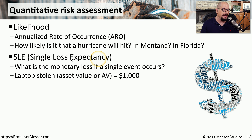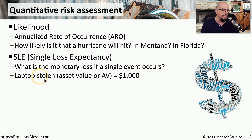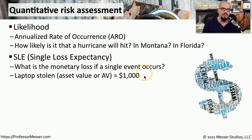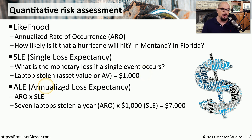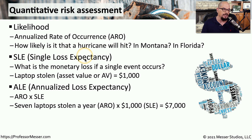Another important metric is the SLE, or single loss expectancy — that describes how much money we're going to lose if that single event occurs. For example, if a laptop is stolen and we have a value on that laptop, we can associate $1,000 with the loss every time a laptop is stolen. To determine the annualized loss expectancy, or ALE, we would multiply the annualized rate of occurrence by the single loss expectancy.